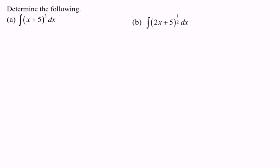Hello everyone. Here we have the situation for the basic rules of integration: integrate (ax + b) to the power of n with respect to x. Part a: integrate (x + 5) to the power of 3 with respect to x.